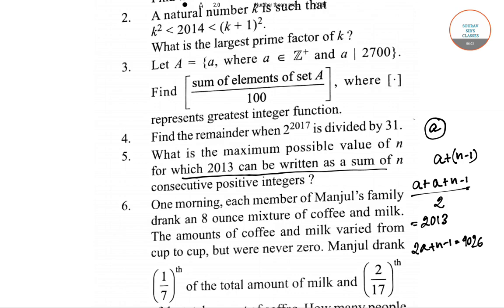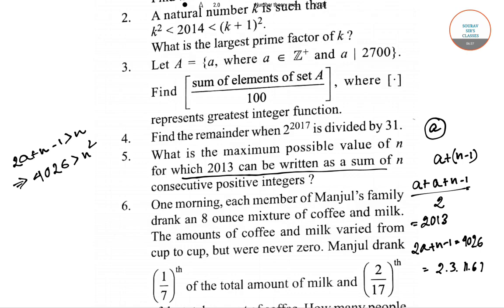We can express 4026 as 2 times 3 times 11 times 61. Since 2a plus n minus 1 is greater than n, we have 4026 greater than n squared. Therefore, the maximum value of n occurs at n equals 61.